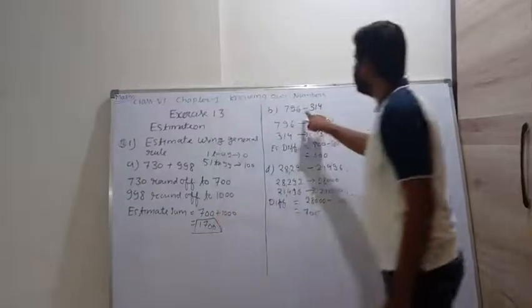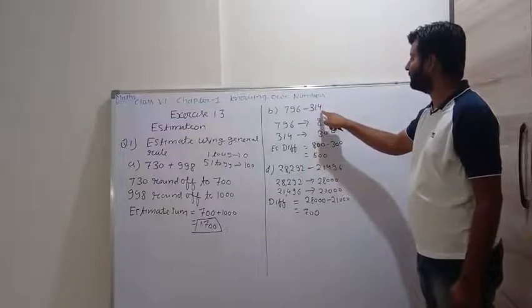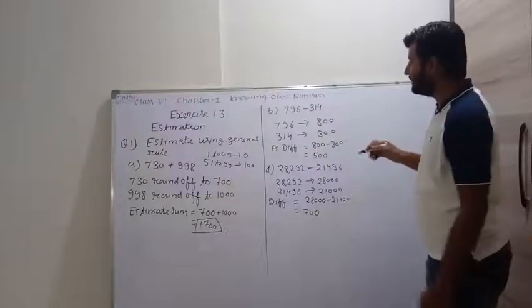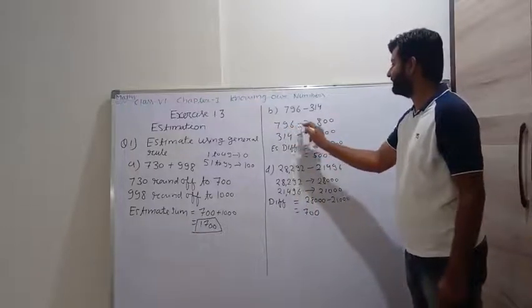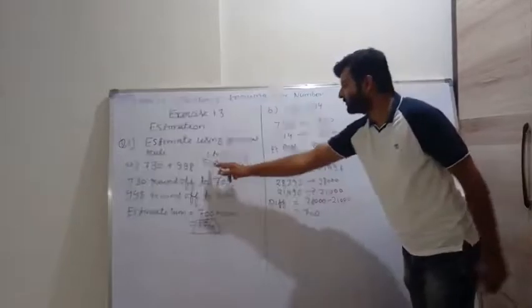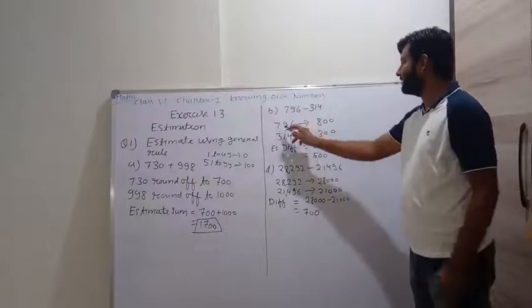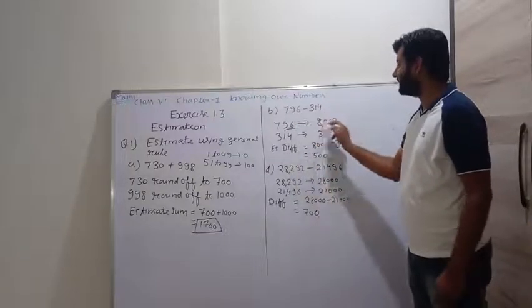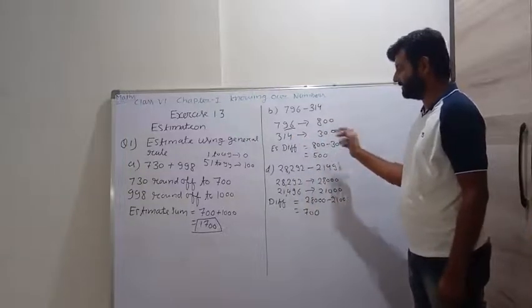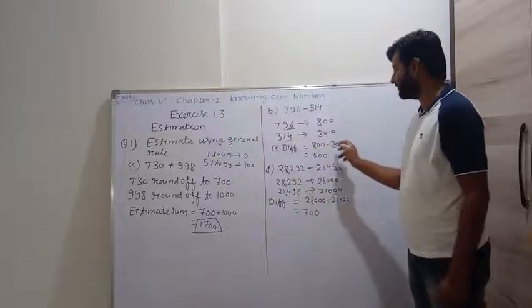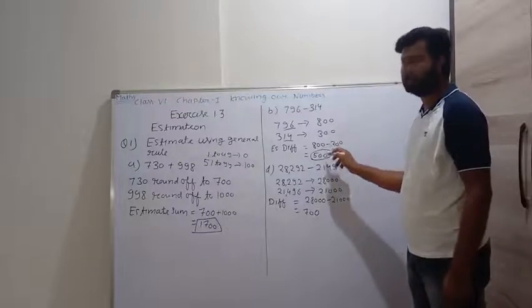Part B: 796 minus 314. First we round up to the nearest 100. 796: here 96 lies between 51 to 99, treated as 100, so 796 becomes 800. And 314: here 14 lies between 1 to 49, so it is treated as 300. We take the difference: 800 minus 300 equals 500.